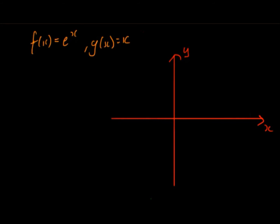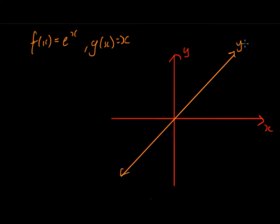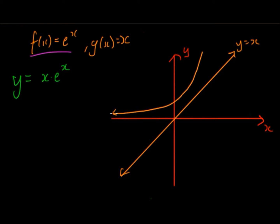Beginning with an example, we have two equations: f(x) = e to the power of x, and g(x) = x. Each of them by themselves we know how to graph. The first step is to graph both. So y = x is a straight line, and the final result we want is y = x times e to the x. Then we graph e to the x, which looks like that.